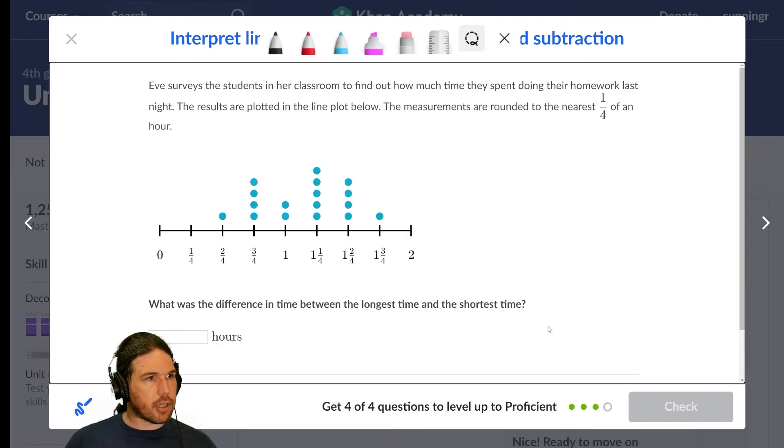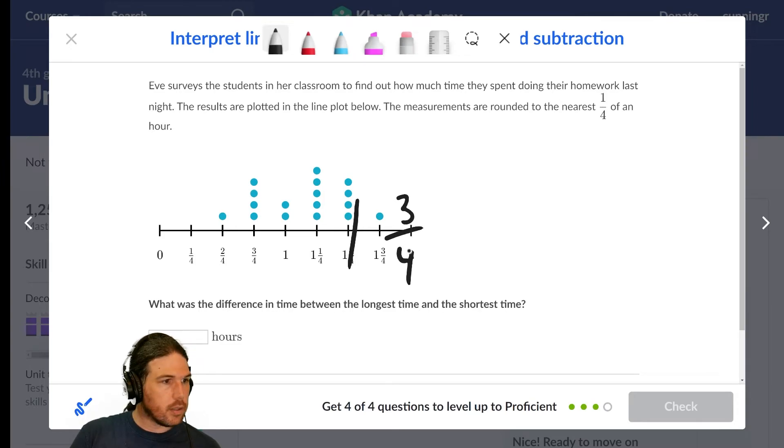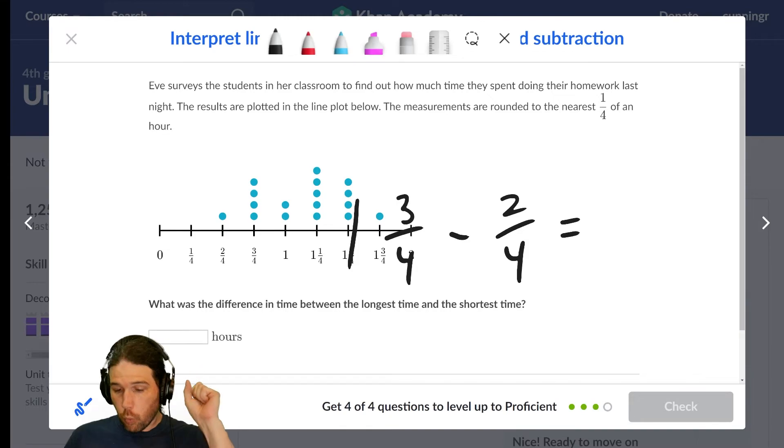Eve surveys the students in her classroom to find out how much time they spent doing their homework last night. The results were plotted on the line below. The measurements are rounded to the nearest one-fourth of an hour. What is the difference? Ah, there's that code word again. Difference means subtract between the longest time, which was one and three-fourths, minus the shortest time, which is two-fourths. Man, I wish that the lowest amount of time students in my classroom took on homework every day was two-fourths of an hour. A half an hour of homework every single day for these students would work wonders for them.